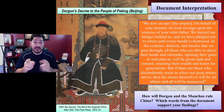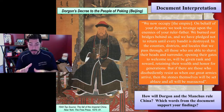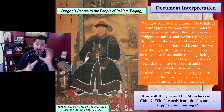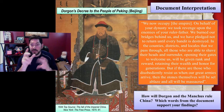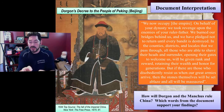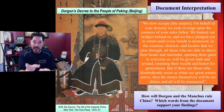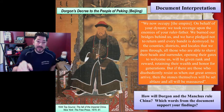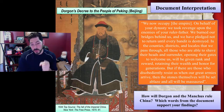What I'd like you to do tonight is look on the worksheet, read and analyze his document — his decree to the people of Beijing — and then answer the question on the bottom: How will Dorgon and the Manchus rule China? Which words from the document support your findings? As you analyze the document, remember Dorgon is a Manchu from the north, a foreign leader coming in to rule and occupy China. We can compare him to Kublai Khan, a Mongol who also did the same thing. Why does the Qing Dynasty last a lot longer than the Yuan Mongol Dynasty? Maybe the answer is somewhere in this document.